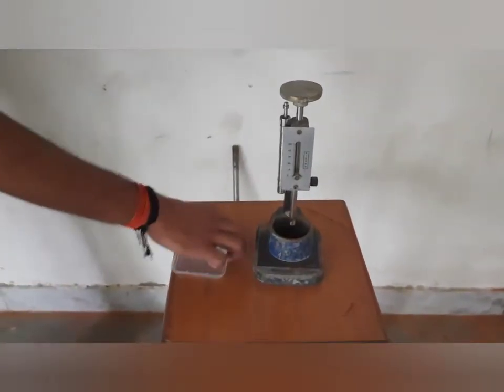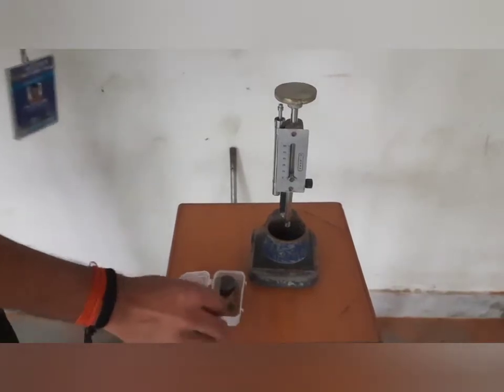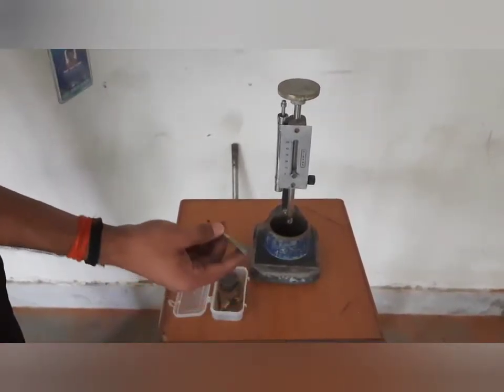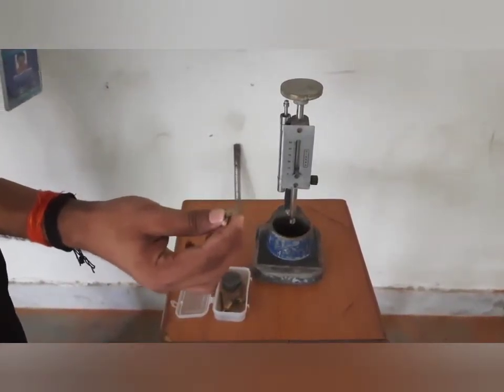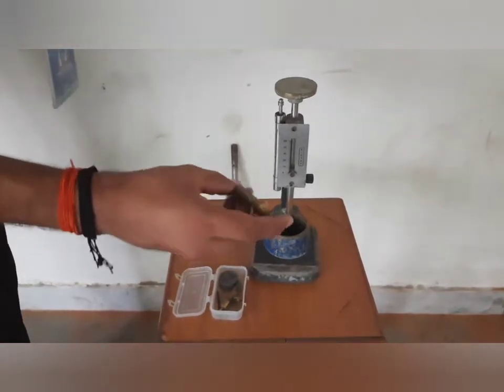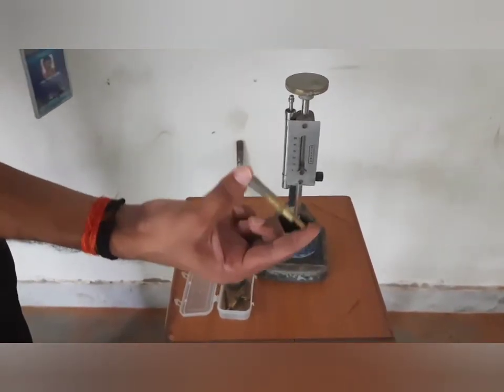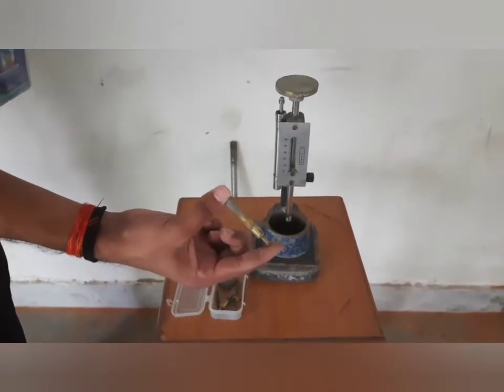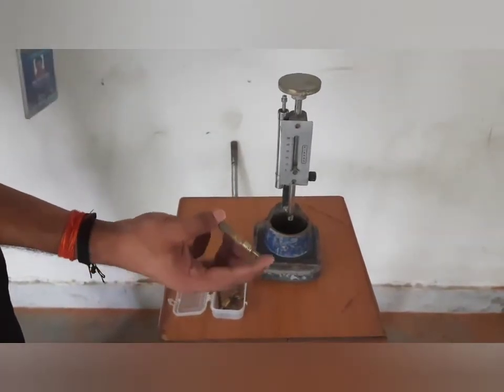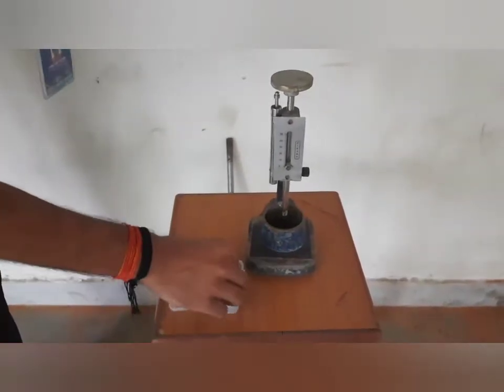Then, we use different types of needles. The first needle in Vicat apparatus is 10 mm square cross section and it is 50 mm long. We use this needle for consistency. When we calculate consistency, we use this needle.